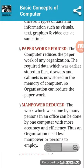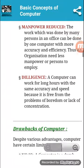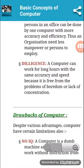Next is paperwork reduced. The computer reduces the paperwork of any organization. Data which was earlier stored in files, drawers, and cabinets is now stored in the memory of the computer. Next is manpower reduced — the work done by many persons can be done by one computer with more accuracy and efficiency. Then diligence: a computer can work for long hours with the same accuracy and speed because it is free from boredom or lack of concentration.